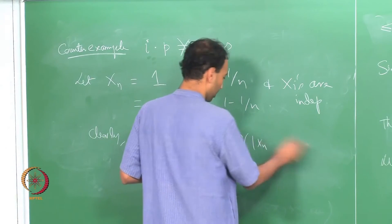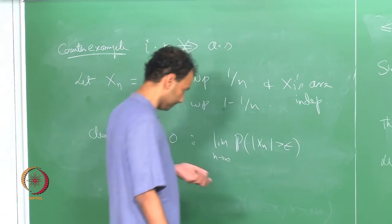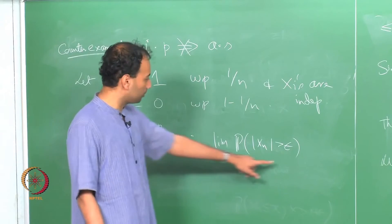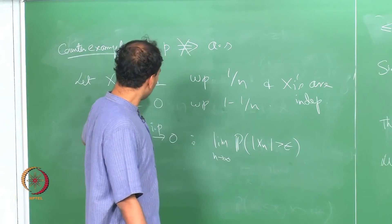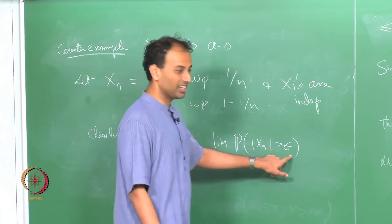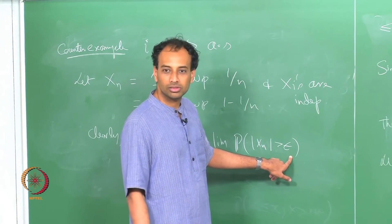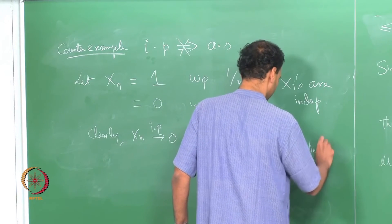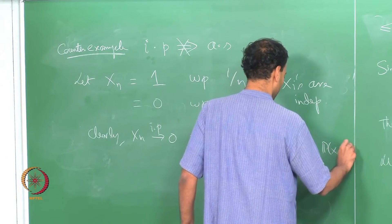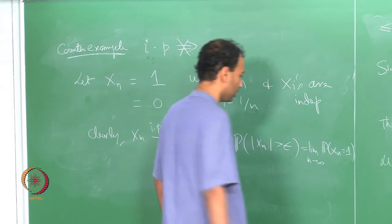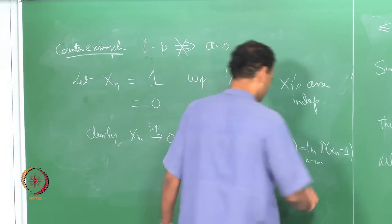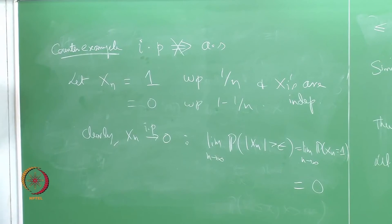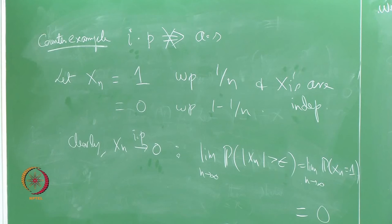Since X_n only takes values 1 or 0, if X_n > epsilon then X_n must equal 1. So this is the same as the limit of P(X_n = 1) = 1/n, and that limit is clearly 0. So X_n converges to 0 in probability.